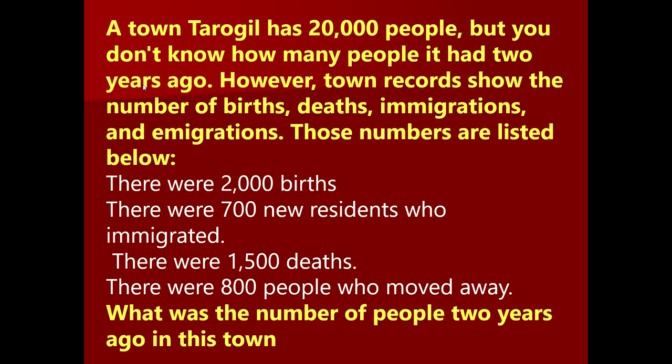A numerical example: the town of Tarogil has 20,000 people. Statistics show 2,000 births, 7,000 new residents who have emigrated in, 1,500 deaths, and 800 people who have moved away. Using the population equation, calculate the number of people in this town two years ago. This is an assignment to be submitted.